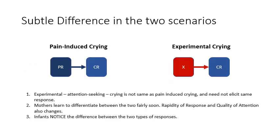There is a subtle difference in the two scenarios: problem-induced crying is different from experimental crying, so it's possible that the two types of crying would lead to different outcomes. In fact, we know this happens because mothers learn to differentiate between infants crying from pain and infants just crying to attract attention. The rapidity with which mothers respond to the cry also depends on the quality of the cry. What's more interesting is that the infants also learn that the response to the two types of crying is different — if they issue a cry of pain, the mother comes quickly, and if they are just crying experimentally, the mother's attention might not be as strong.